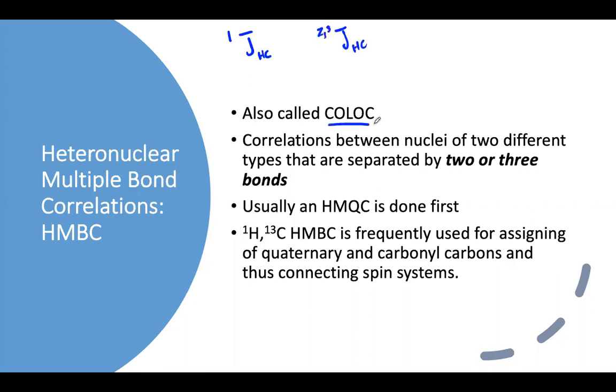The old version of this experiment was called the COLOC. It was gathered in a different way, but the spectra look the same. So you can see and interpret them in the same way if you see a COLOC. So, two to three bonds.